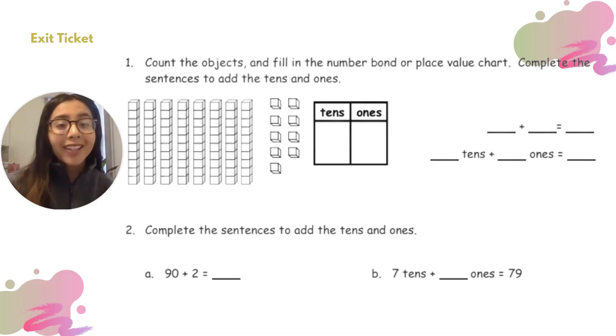For your exit ticket today, you're going to be doing the same thing you just did. You're going to count some objects, for example the cubes right there, you're going to figure out how many tens there are and how many ones, and then two number sentences to show the tens and the ones, the two parts that make up your total.